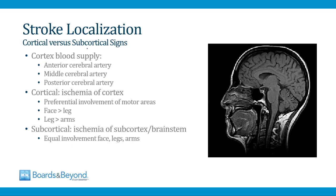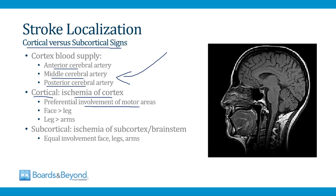Another very important distinction in stroke localization is cortical versus subcortical signs. A cortical sign is a clinical finding that indicates ischemia of the cortex, meaning one of the three cortical vessels must be the cause. One of the most important cortical signs is preferential involvement of motor areas — motor weakness where the face is involved more than the legs or the legs more than the arms. This only occurs in cortical strokes because only in the cortex are the neurons for the face, legs, and arms separated in space.